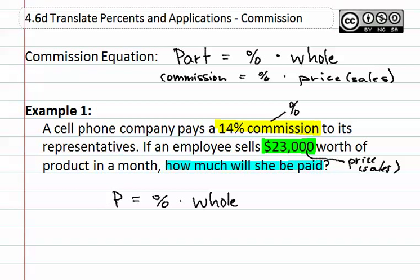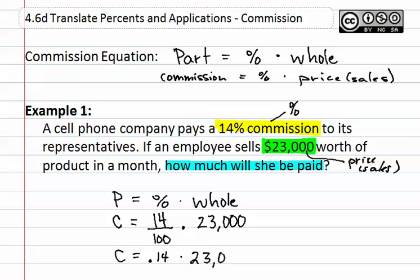The part in this case is the amount of commission, which we do not know — let's use C. This will equal the percent, which is fourteen. Remember, percent means per one hundred. We now multiply this by the whole, or the twenty-three thousand. We start by doing the division of fourteen over one hundred, which gives us 0.14. We now multiply this by twenty-three thousand and we get an answer of three thousand two hundred and twenty. This is the amount of commission she will make.